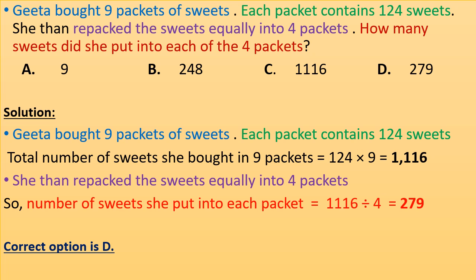Geetha bought 9 packets of sweets. Each packet contains 124 sweets. So, total number of sweets she bought in 9 packets = 124 × 9 = 1116. She then repacked the sweets equally into 4 packets. So, number of sweets she put into each packet = 1116 ÷ 4 = 279. So each packet contains 279 sweets. Correct option is D.